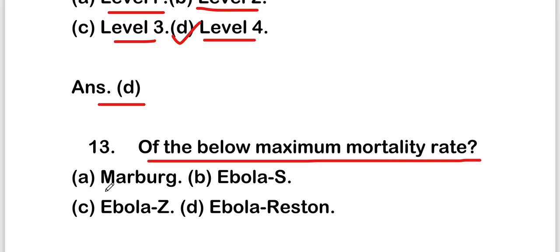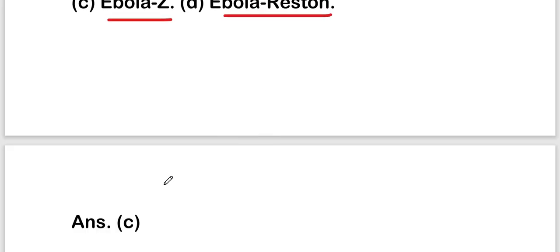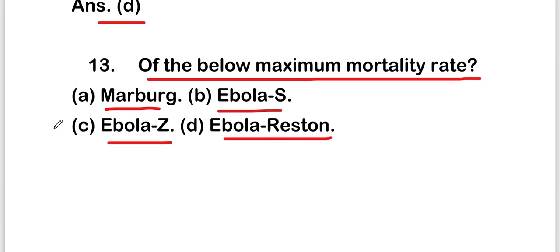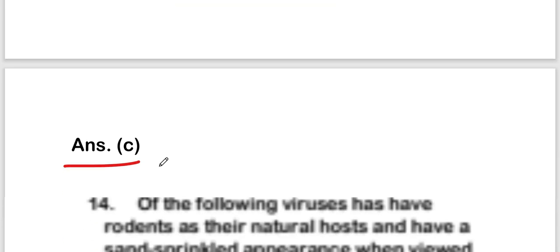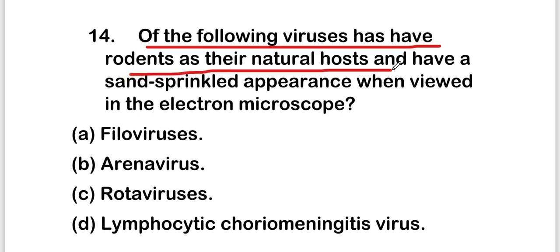The next question is: of the following, which has the maximum mortality rate — Marburg, Ebola Sudan, Ebola Zaire, or Ebola Reston? The right answer is option C — Ebola Zaire has the maximum mortality rate.